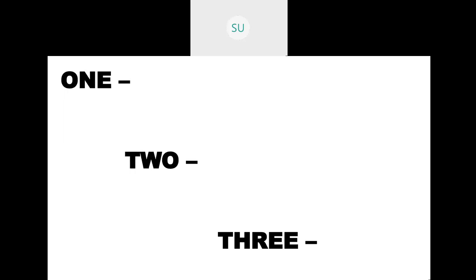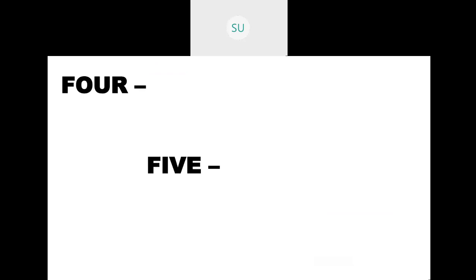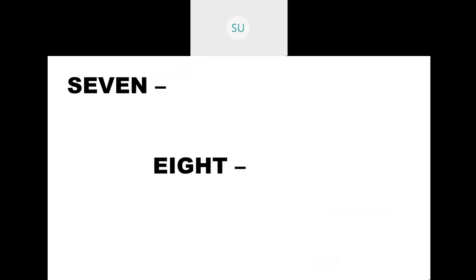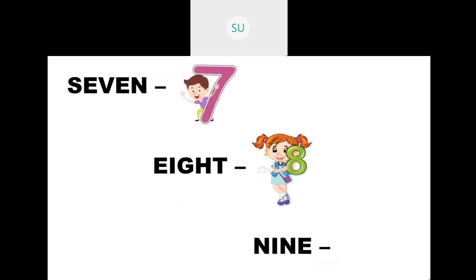Before we do that, we will see numbers from 1 to 9 once again. First we have ONE, 1. Then TWO, 2. Then THREE, 3. So this is 1, 2, and 3. Then we have FOUR, 4. Then FIVE, 5. SIX, 6. So 4, 5, 6. Then we have SEVEN, 7. EIGHT, 8. And NINE, 9. So 7, 8, 9. We saw numbers up to 1 to 9.